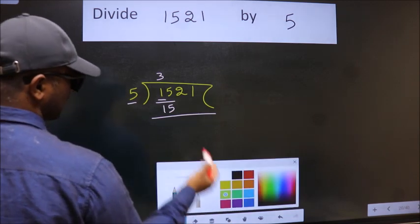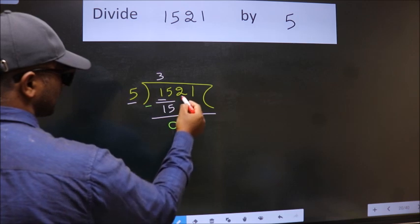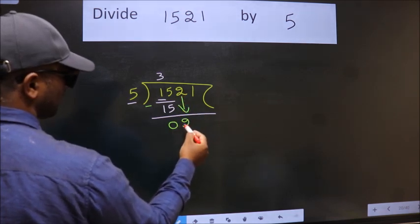Now we should subtract. We get 0. After this, bring down the next number. So 2 down.